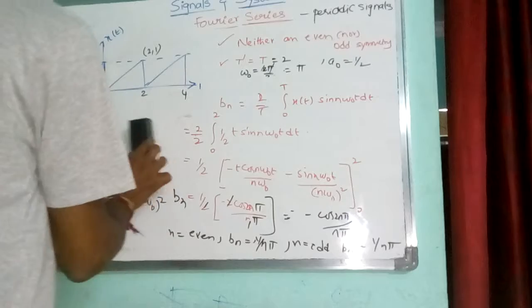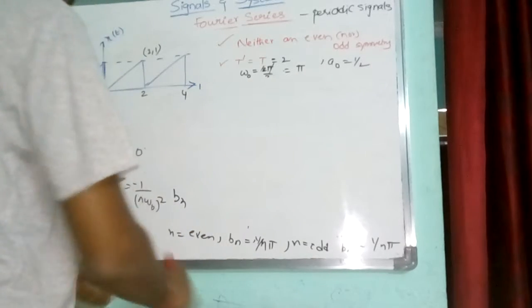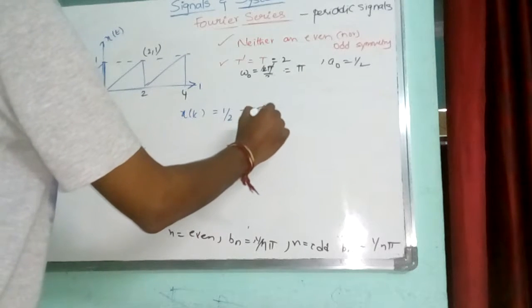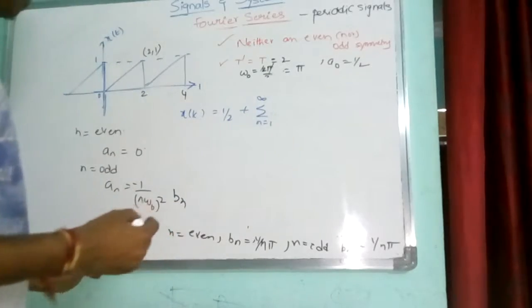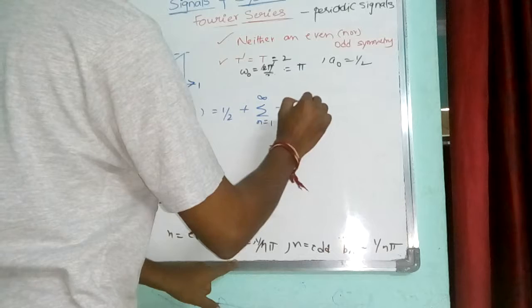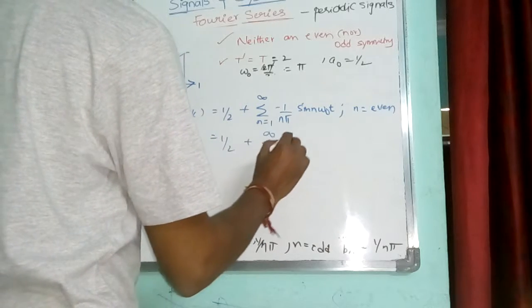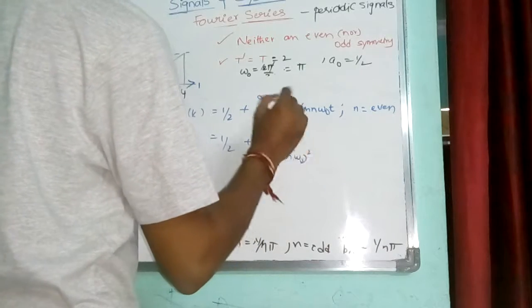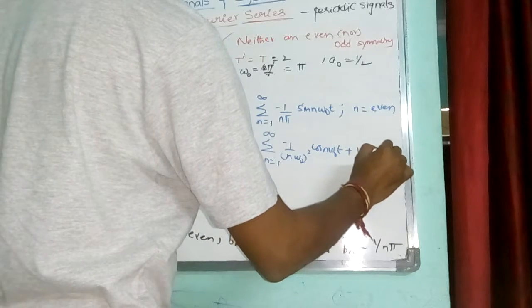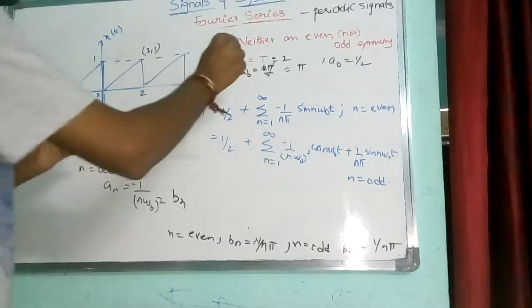We got all the terms here. Expressing the Fourier series for two values of N: X of T is half, plus summation N equal to 1 to infinity. For the even values, I don't have A N, so directly for B N: minus 1 by N pi, sin N omega naught T, for N equal to even. Similarly, for odd values, N equal to 1 to infinity: 1 by N omega naught whole square, minus 1 by omega naught whole square, cos N omega naught, plus 1 by N pi, sin N omega naught T, for N equal to odd. So, this is the Fourier series of the given signal — this is the neither even nor odd symmetry.